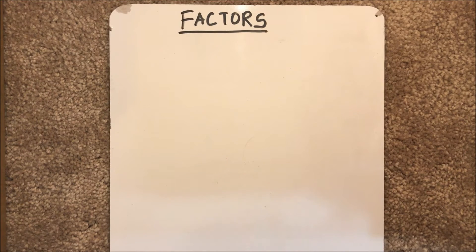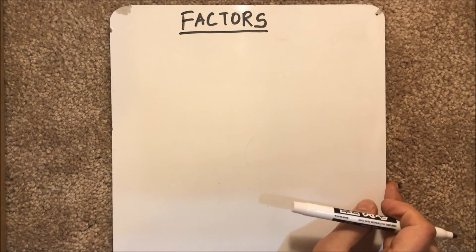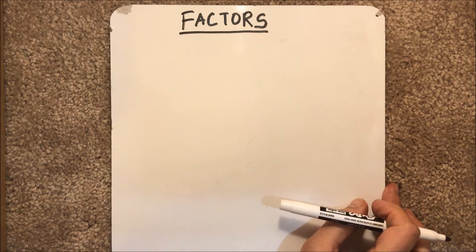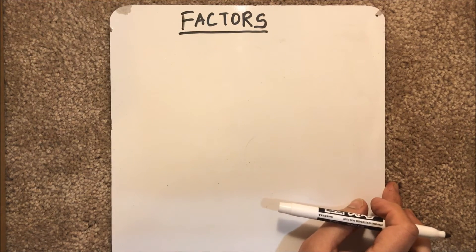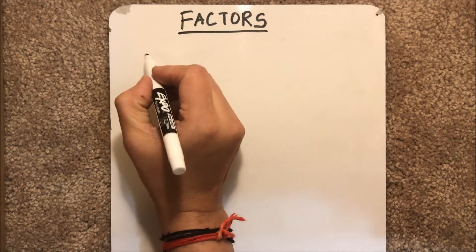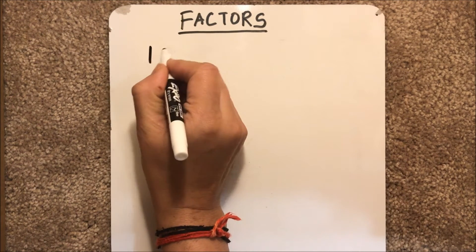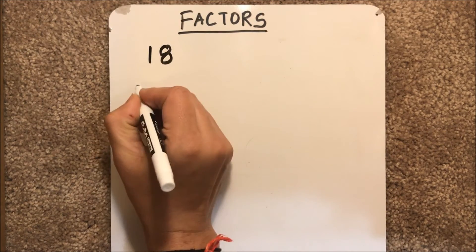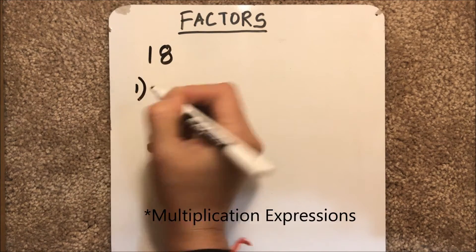Hello viewers, today I am going to tell you about factors. Factors are numbers that are multiplied to get a product. For example, we want to find the factors of 18. We will write all the combinations by which we are getting the number 18.